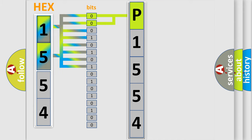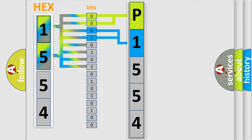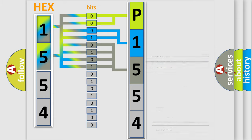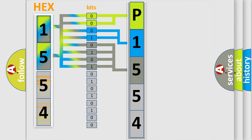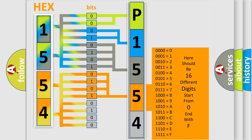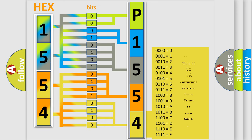The next two bits determine the second character. The last four bits of the first byte define the third character of the code. The second byte is composed of a combination of eight bits. The first four bits determine the fourth character, and the combination of the last four bits defines the fifth character. A single byte conceals 256 possible combinations.